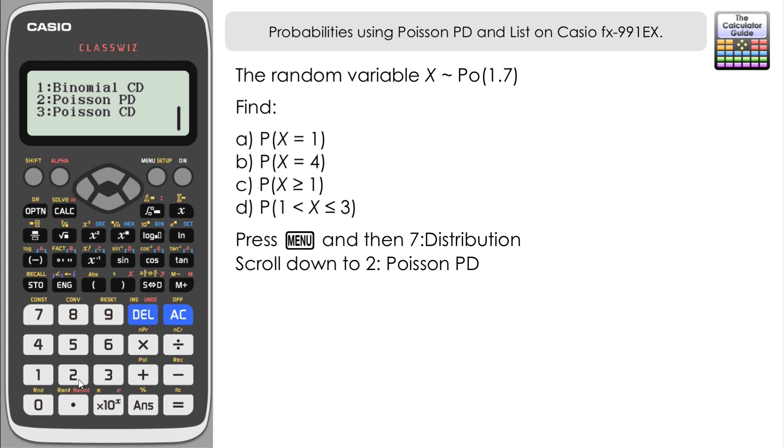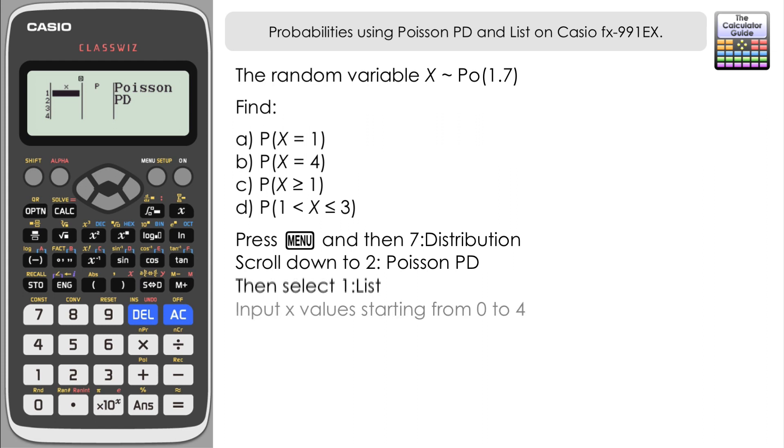Because we've got a number of different probabilities to find, it's going to be helpful for us to use list to answer this question. So select 1:List. Now we need to input some x values based on the results that we want to answer these particular questions. We're going to need results up to X equaling 4, but I would suggest starting from 0 because that's going to be useful for part c. Input 0 to 4 in the X column.